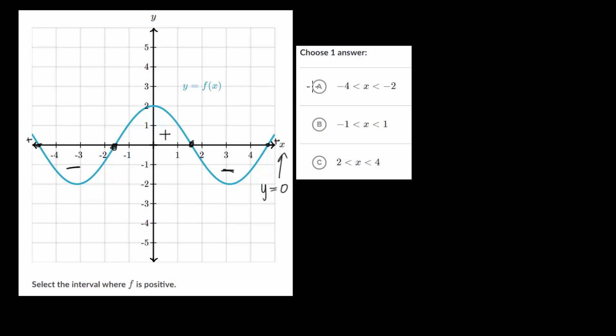Now, going to our answer choices, let's just go through each of these. From minus 4 to minus 2, so that's from here to here, and it looks like in that entire interval, the function is negative. So it's not going to be that one. From minus 1 to 1, so that's from here to here, and in that interval, the y value is always positive. So that looks to be our answer.